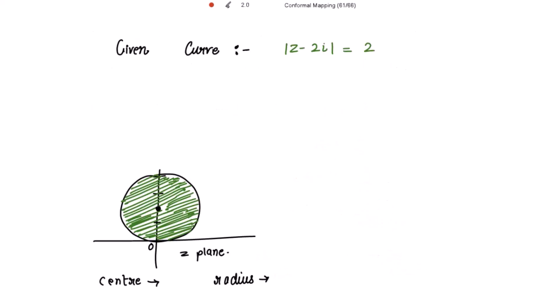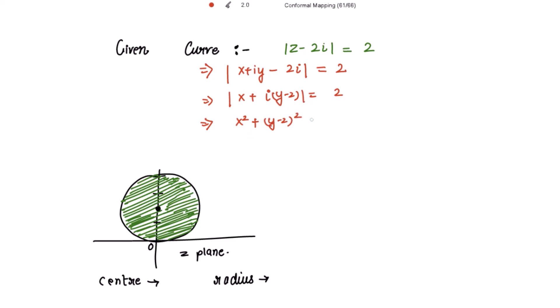The given curve is |z - 2i| = 2. Substituting z = x + iy gives |x + i(y - 2)| = 2, which implies x² + (y - 2)² = 4. Expanding, this gives x² + y² - 4y = 0.